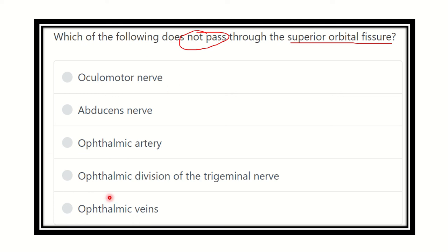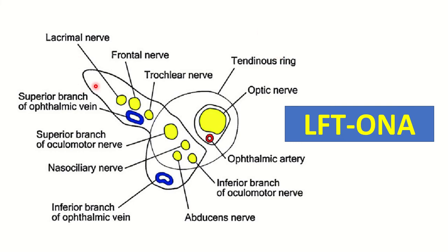We have to find out which of the options does not pass through the superior orbital fissure. Here we can see the superior orbital fissure in the orbital view. We can see the different structures which pass through this superior orbital fissure. It has a nervous component and a venous component.